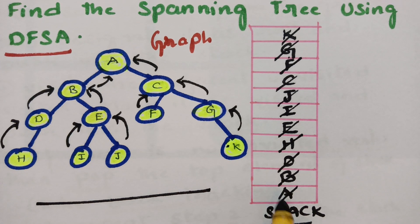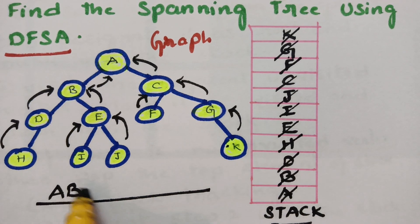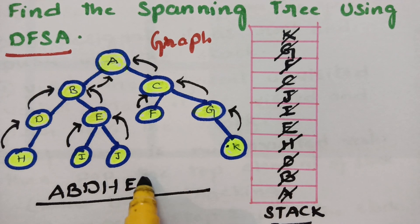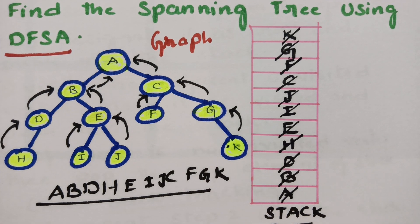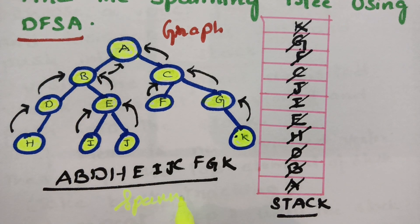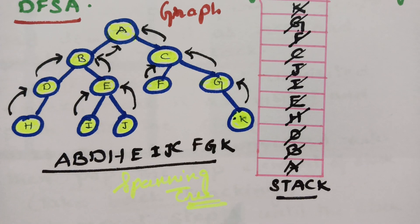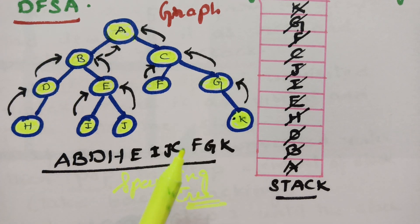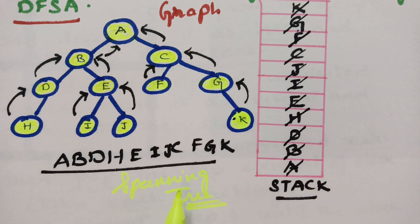Now we write the traversal order from top to bottom: A, B, D, H, E, I, J, C, F, G, K. This is how we construct a spanning tree using the depth first search algorithm. The spanning tree is obtained — all vertices are included. If there are n vertices, the spanning tree maintains n minus 1 edges, and it does not contain any loops, circuits, or cycles. Therefore it is a valid spanning tree.